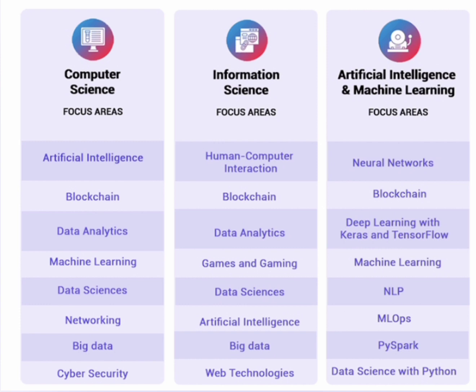Blockchain is also common between all branches, as it is an application of IT services. Data analytics is there in computer science and information science, and in the AIML branch it appears as data science with Python. Since AIML does not focus entirely on data, it covers initial data concepts, with a full end-to-end data science focus found in a separate branch called AI and Data Science (AI and DS).